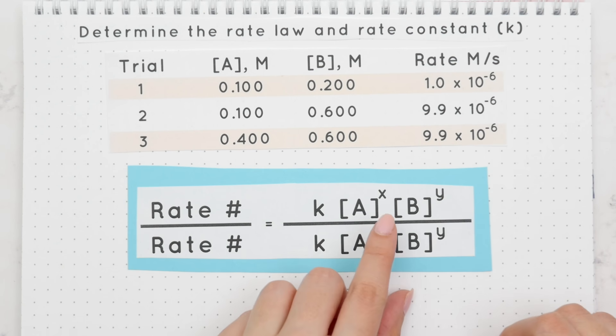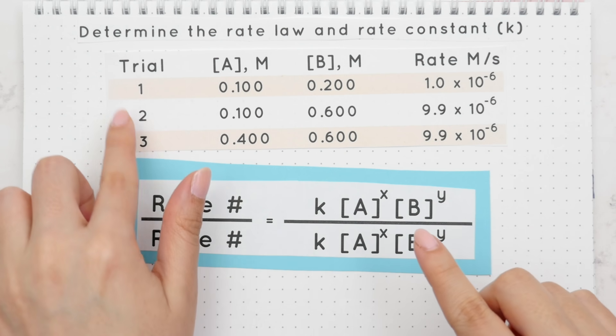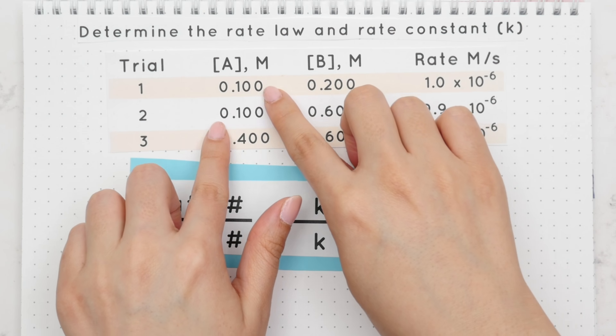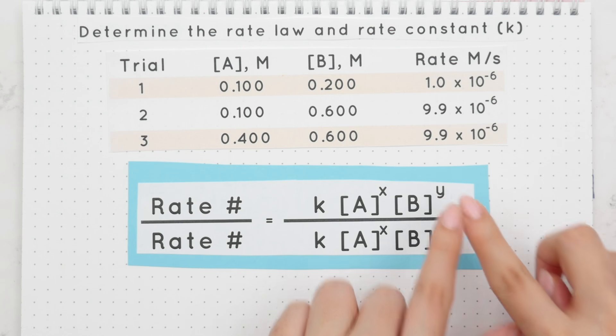We'll use this formula to solve for x and y, which are the reaction orders. Since there are two unknowns, we will pick trials 2 and 1 because they have the same values which would cancel out, and we would be left with just one unknown, which is y.